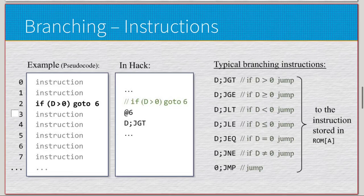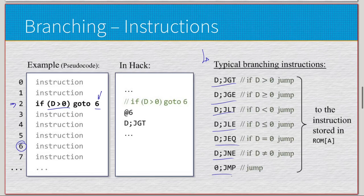Starting at instruction two, we have if D is greater than zero, go to six. Six is the instruction that we want to jump to, and D is greater than zero is the comparison that we are going to do. On the right side, we have a chart of all these different instructions: D;JGT, D;JGE, D;JLT, D;JLE, D;JEQ, D;JNE, and then finally 0;JMP.